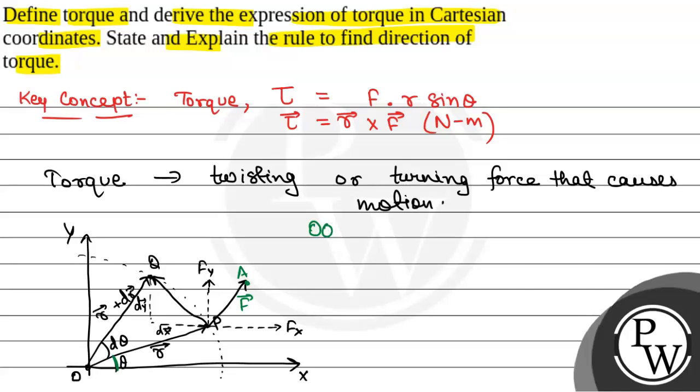So from the figure, OQ is equal to r plus dr, r plus dr. And angle POQ is equal to d theta.